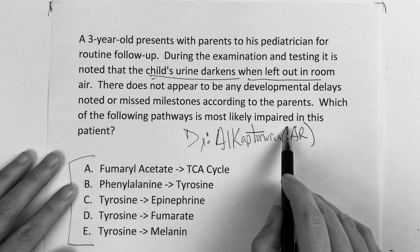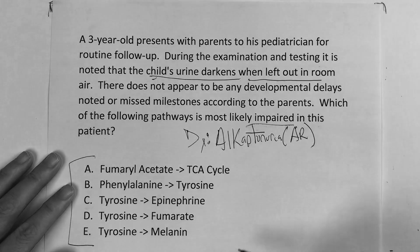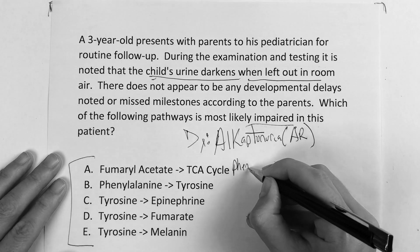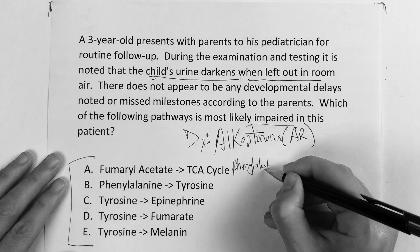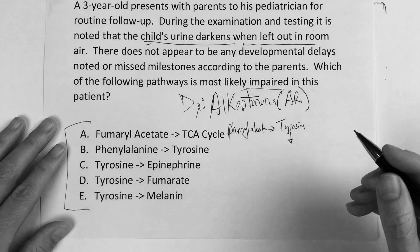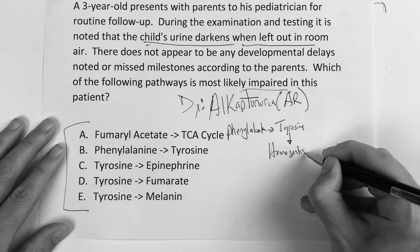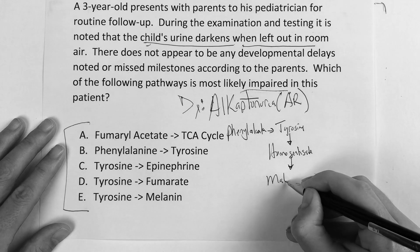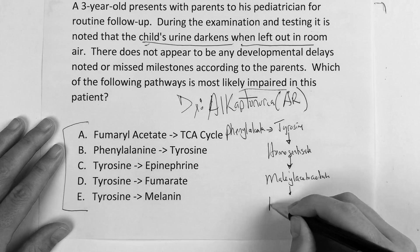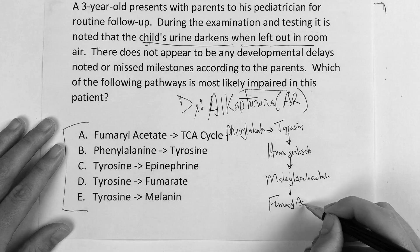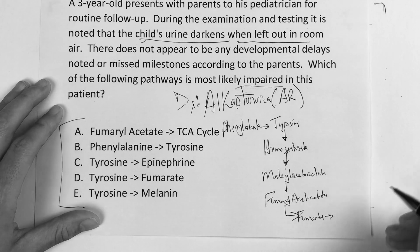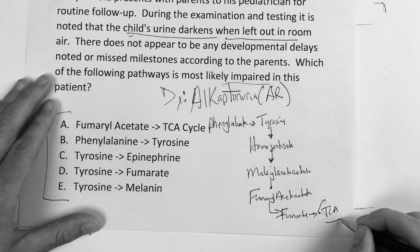They're asking which of the following pathways is most likely impaired. They weren't asking what's the deficient enzyme or what's the thing that's built up. They're asking what's the messed-up pathway for this person. You better start with phenylalanine — phenylalanine makes tyrosine. In this case, you're going to take a right turn at tyrosine, and it's going to make homogentisate or homogentisic acid, which is going to make maleylacetoacetate, which is going to make fumarylacetoacetate. Then it can make fumarate, and fumarate is going to go into the TCA cycle.